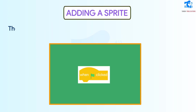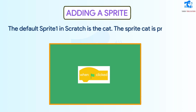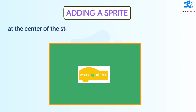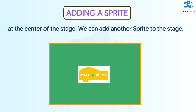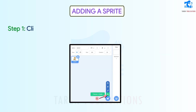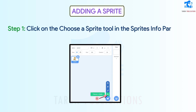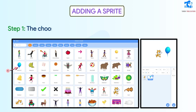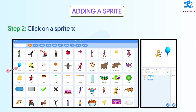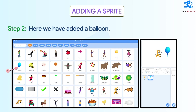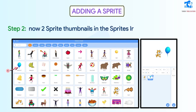Adding a Sprite. The default Sprite 1 in Scratch is a cat, present at the center of the stage. We can add another Sprite to this stage. Step 1: Click on the Choose a Sprite tool in the Sprite's info pane. The Choose a Sprite window will appear. Step 2: Click on a Sprite to add it to your project. Here we have added a balloon. Notice that there are now two Sprite thumbnails in the Sprite's info pane.